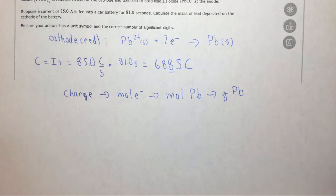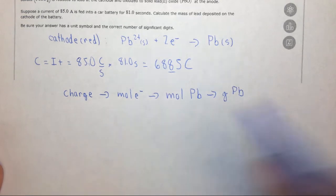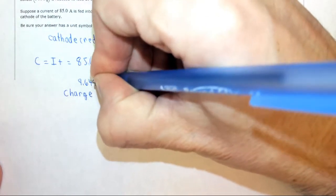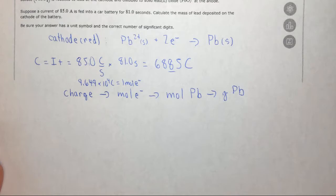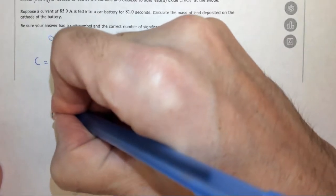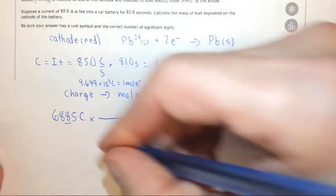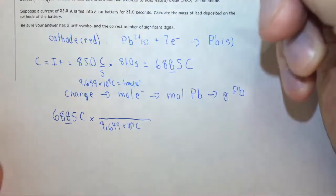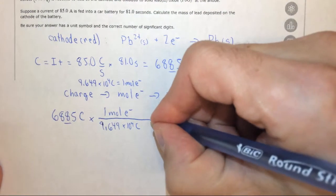So in this case we have the charge, which we found from this equation. We need to convert it to moles of electrons. Faraday's constant tells us that 9.649 times 10 to the 4 Coulombs is equal to 1 mole of electrons. So starting with our 6885, where that's the sig fig, Coulombs times. We want the Coulombs on the bottom so they cancel out. 9.649 times 10 to the 4 Coulombs, and on top 1 mole of electrons times.